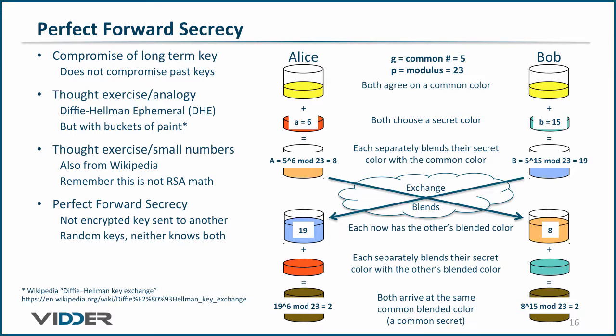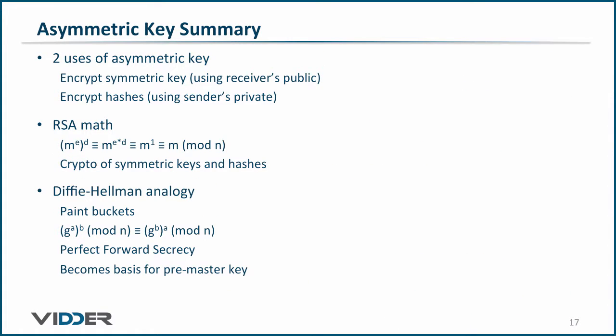In this video, you've learned how to encrypt a symmetric key with the receiver's public key, and how to create signatures by encrypting hashes with the sender's private key. You've seen the math behind the RSA algorithm.